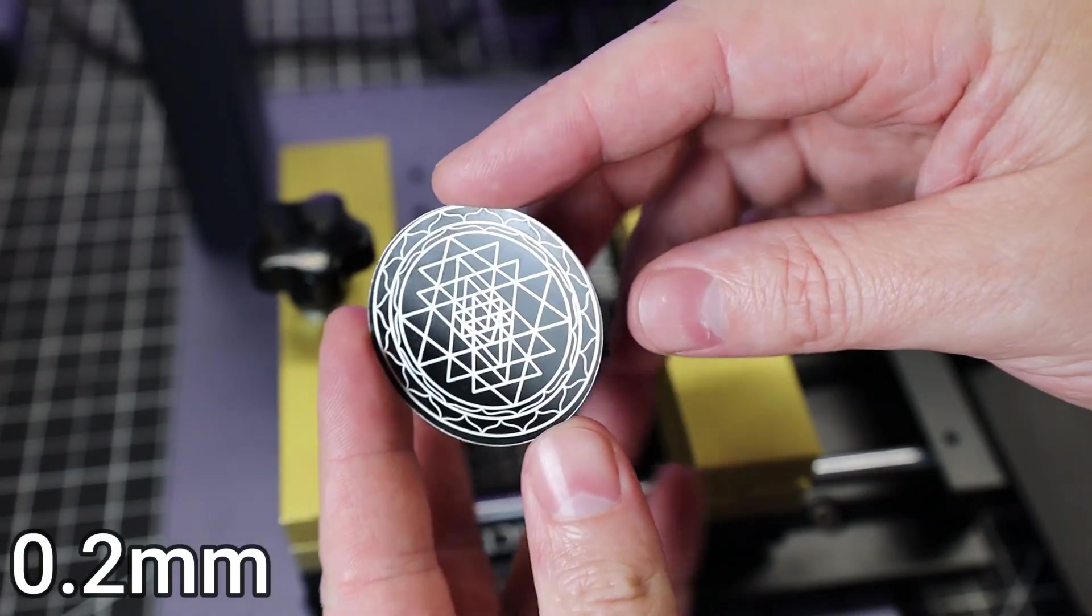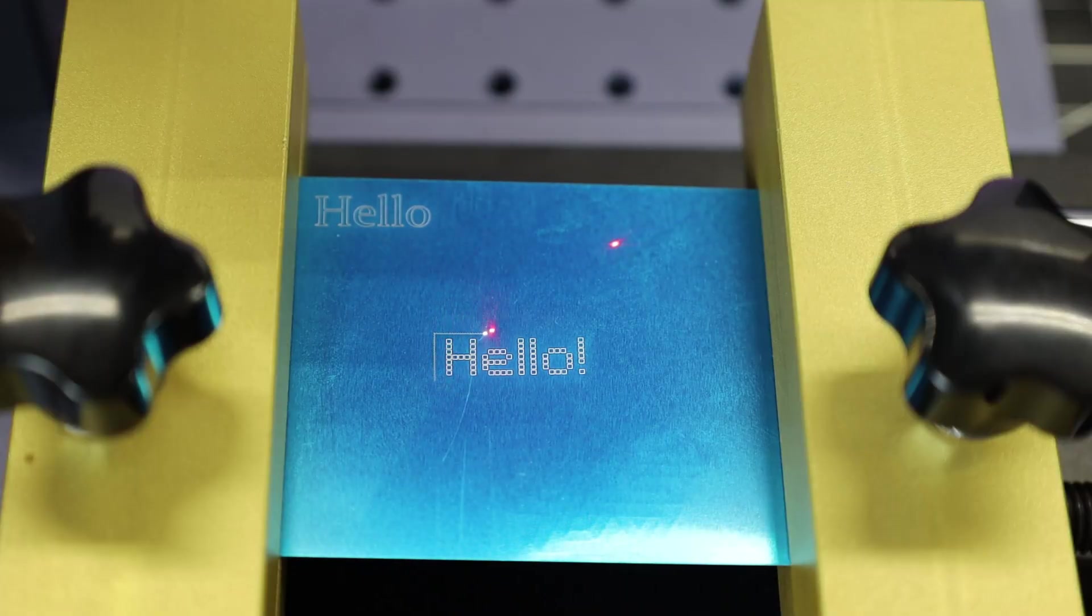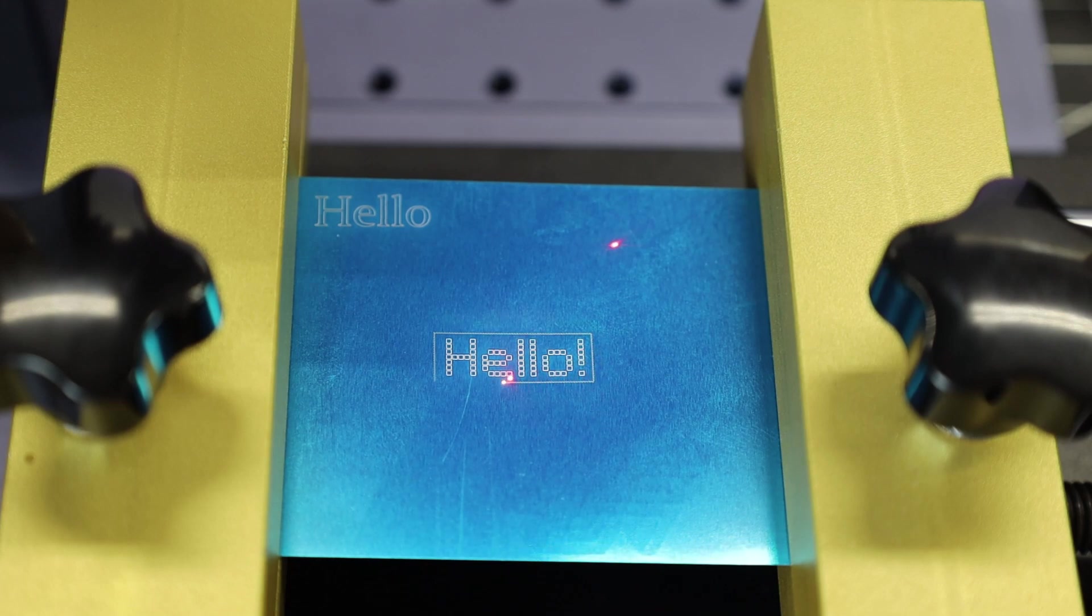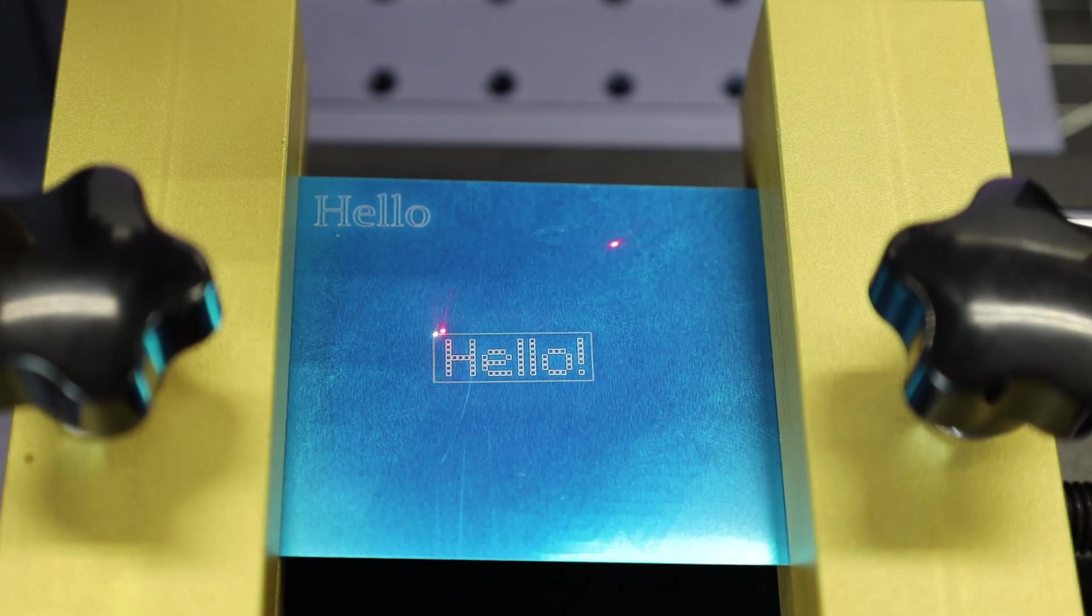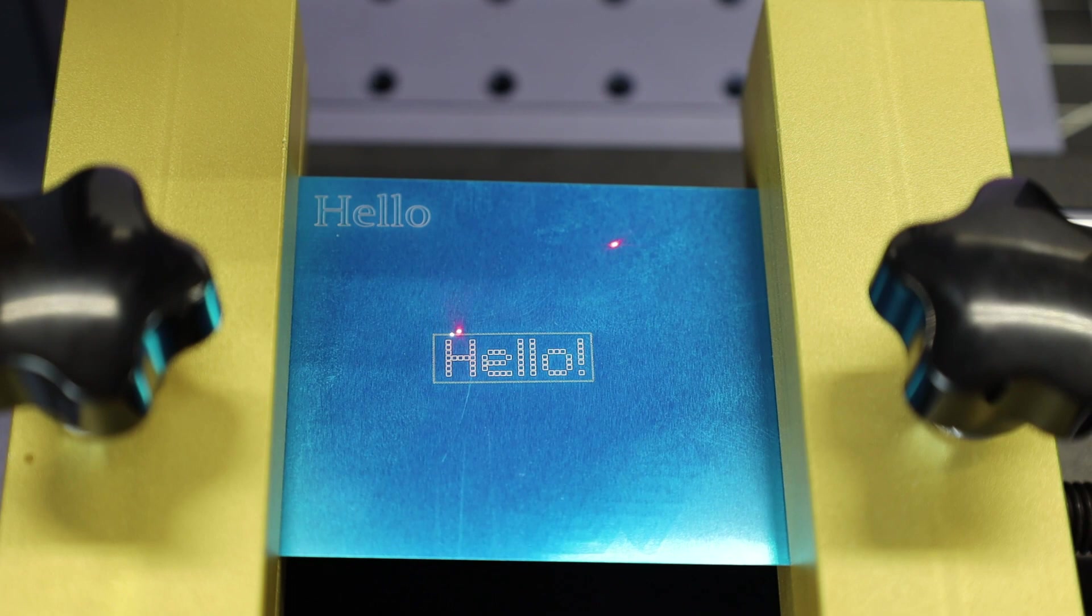And keep in mind, this aluminum is only 0.2 millimeters thick. So the thicker the metal, the longer it's going to take, or it might just not be able to go through it at all if it's way too thick. So with this 20 watt machine, I would think that you could do maybe a maximum of half a millimeter in a reasonable amount of time.